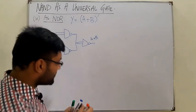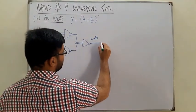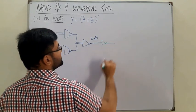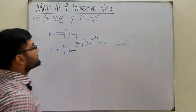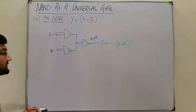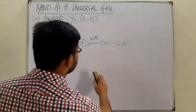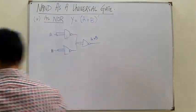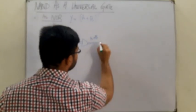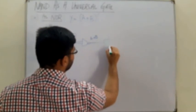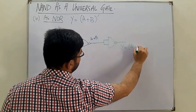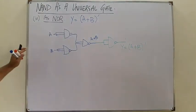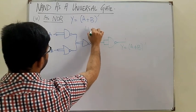Now we place a NOT gate after the OR circuit, giving (A OR B) complement, which is the NOR function. We replace that NOT gate with a NAND gate (inputs tied together). So the complete NOR implementation uses four NAND gates: three to implement OR and one acting as NOT to complement the result.